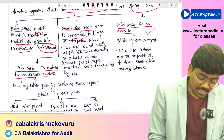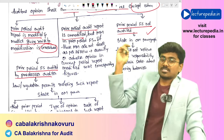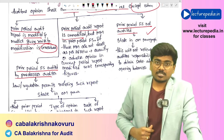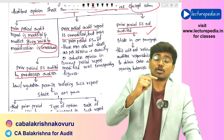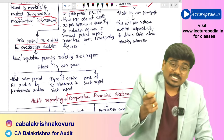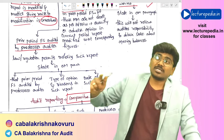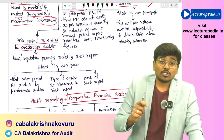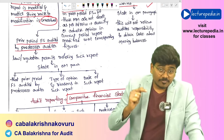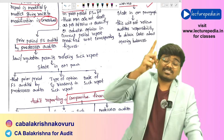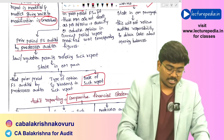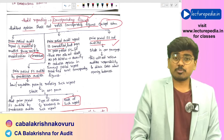Fourth situation: prior period financial statements were audited by a predecessor auditor. If law or regulation allows you to refer to that predecessor auditor's report, state in the other matter paragraph that the prior period financial statements were audited by another auditor, the type of opinion given, the reasons for any modification, and the date of that audit report. These same points apply for both corresponding figures and comparative financial statements scenarios.